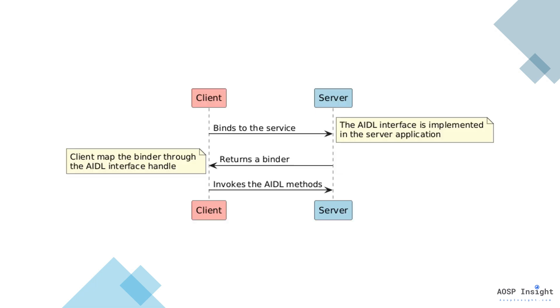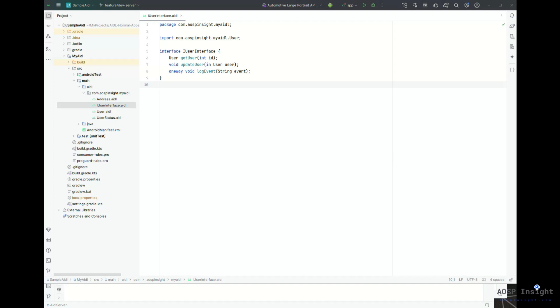I've also provided a sequence diagram. As you can see, the first step happens on the client side, which needs to bind to the service. The server side returns a binder, and then when the client has a handle to the implemented AIDL interface, it can invoke all the AIDL methods, which I will show you in the code.